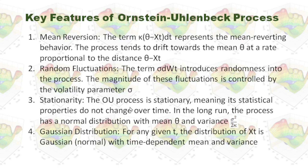Thirdly, the OU process is stationary, meaning its statistical properties do not change over time. In the long run, the process has a normal distribution with mean theta and a corresponding variance. Lastly, for any given t, the distribution of x(t) is a Gaussian distribution with time-dependent mean and variance.